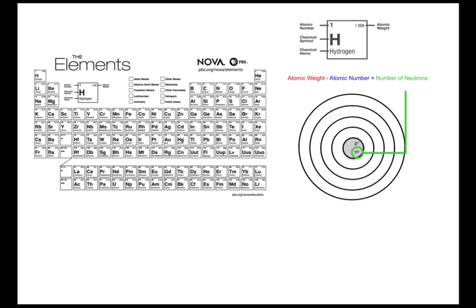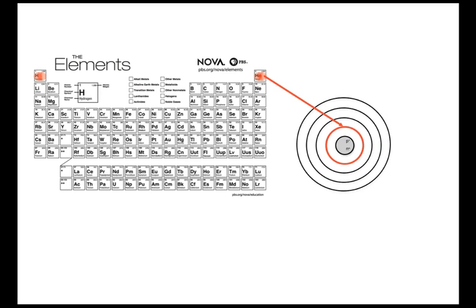If we subtract the number of protons from that total mass, we can calculate the number of neutrons. Depending on which period in the periodic table we find the element, this indicates to us the number of electron shells.